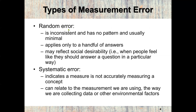The first is random error. Random error is inconsistent, has no pattern, and is usually minimal — that's why we call it random. It can happen randomly with no pattern. It is also limited to a handful of answers and may refer to social desirability, which is when people feel they should answer a question in a particular way. This depends on how we set questions — people may feel they should answer a question in a very specific way.